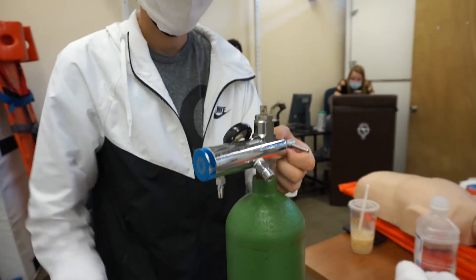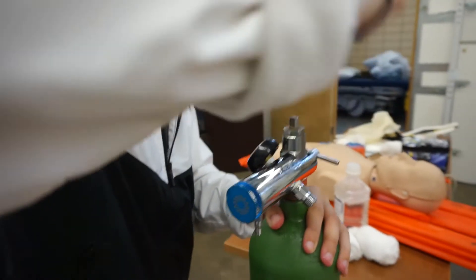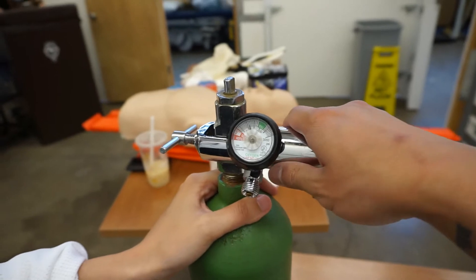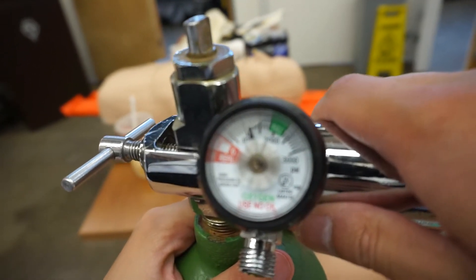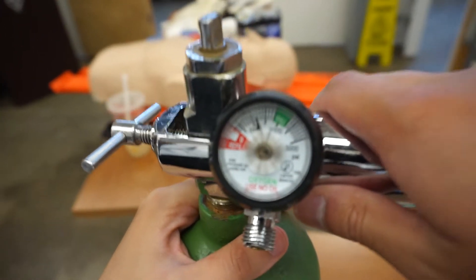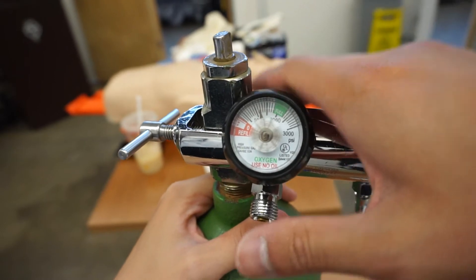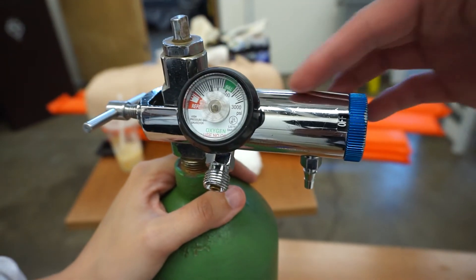And then go ahead and crack the tank. Great. And so now when we look at the regulator, we should see the regulator's at a certain pressure. So right now it's about 1100, and now we have a fully pressurized regulator.